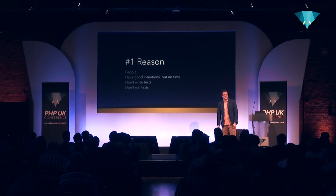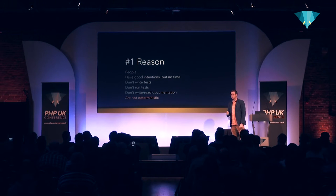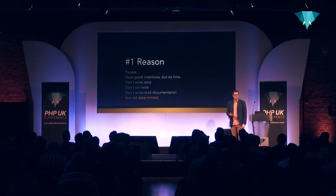The number one reason why we should automate is people — and when I say people, I mainly mean myself. People have the best intentions but no time. They don't have tests, and when they do have tests, they don't run them. Same goes for documentation. But perhaps the most important thing is that people are not deterministic. They can do the same thing twice and get two different outputs. Isn't this what computers were invented for? You give them an input, they give you an output — it's the same every time.